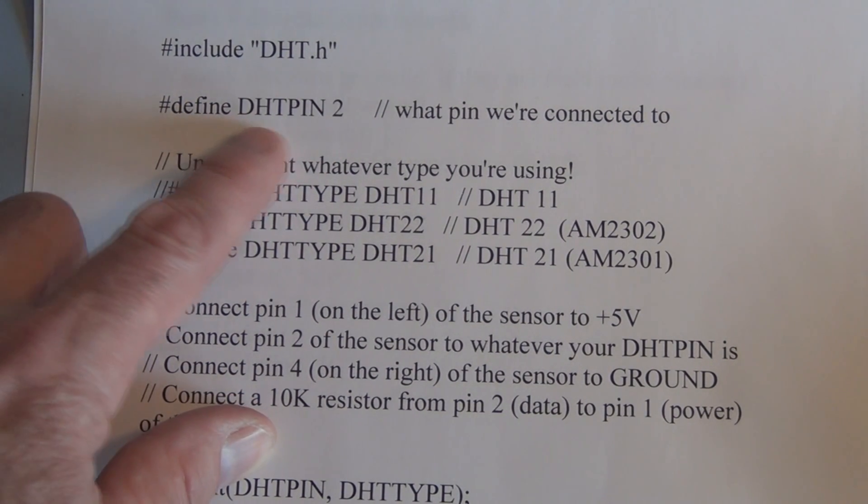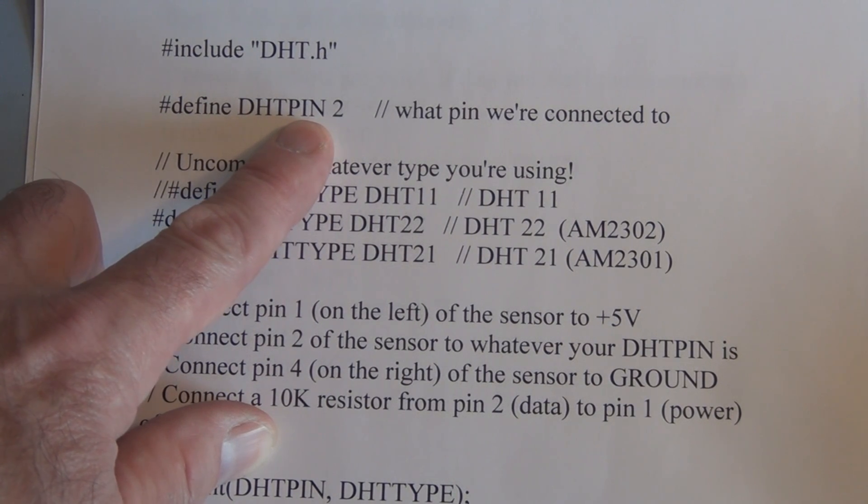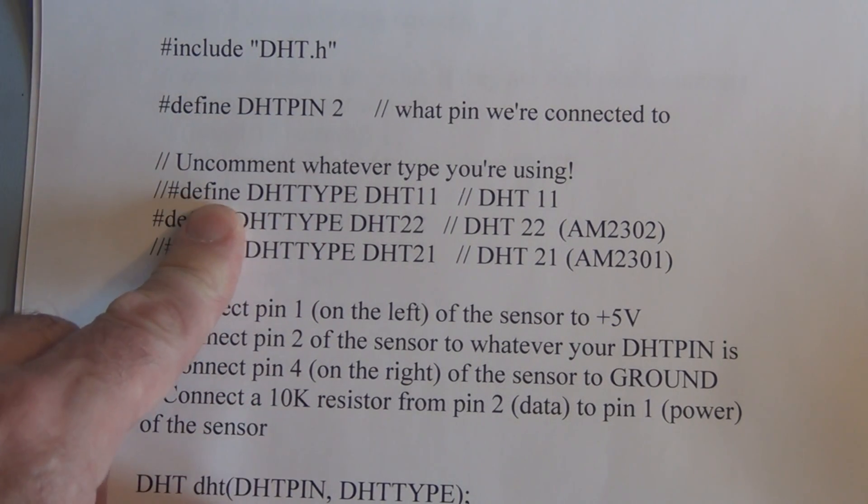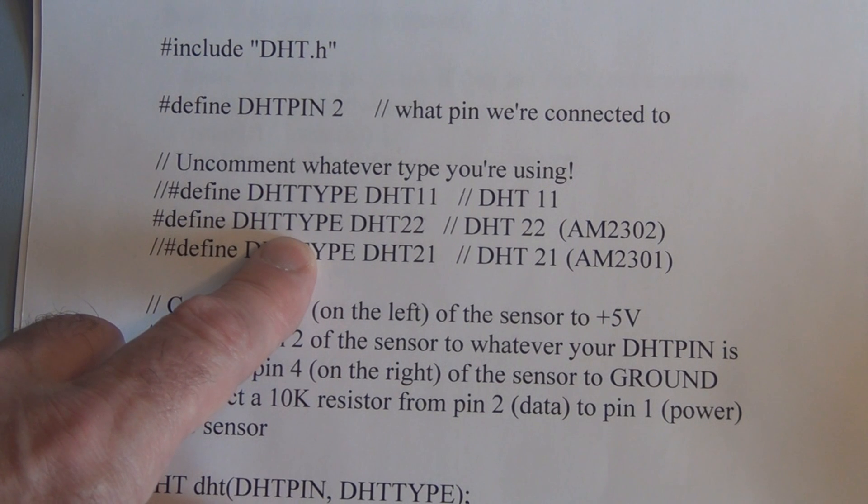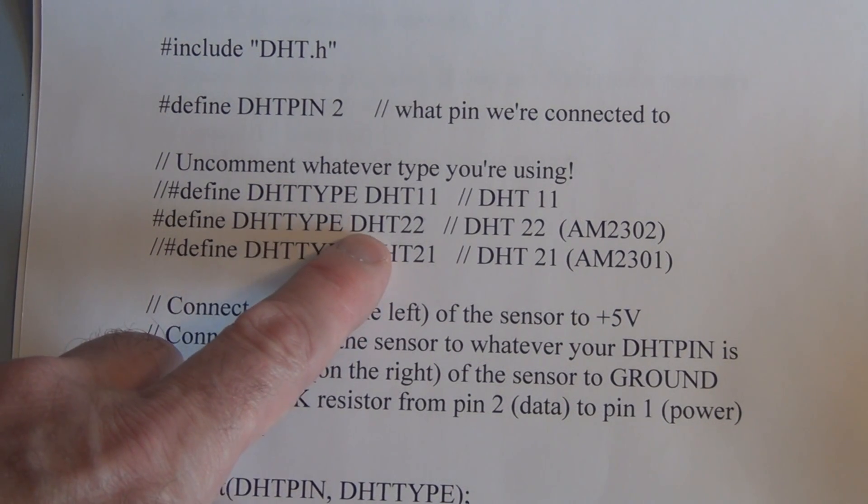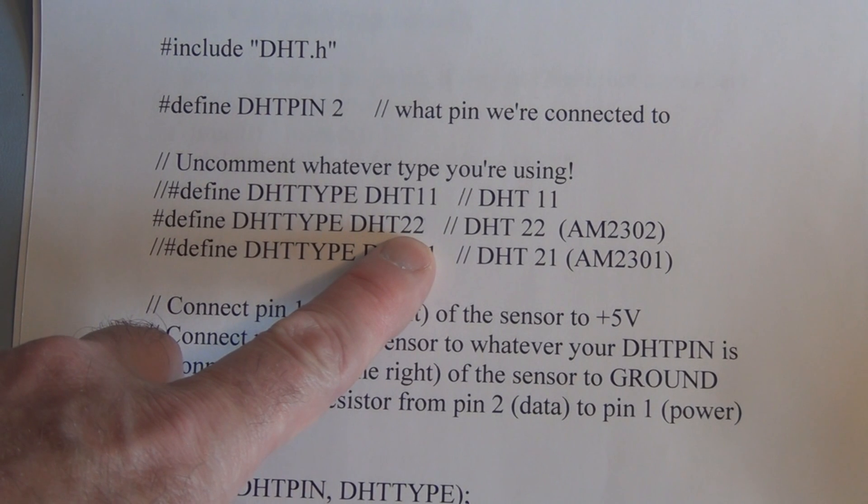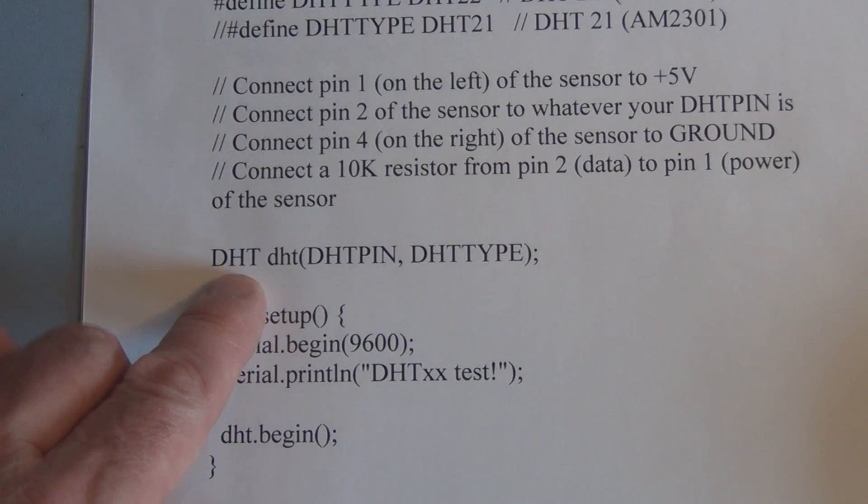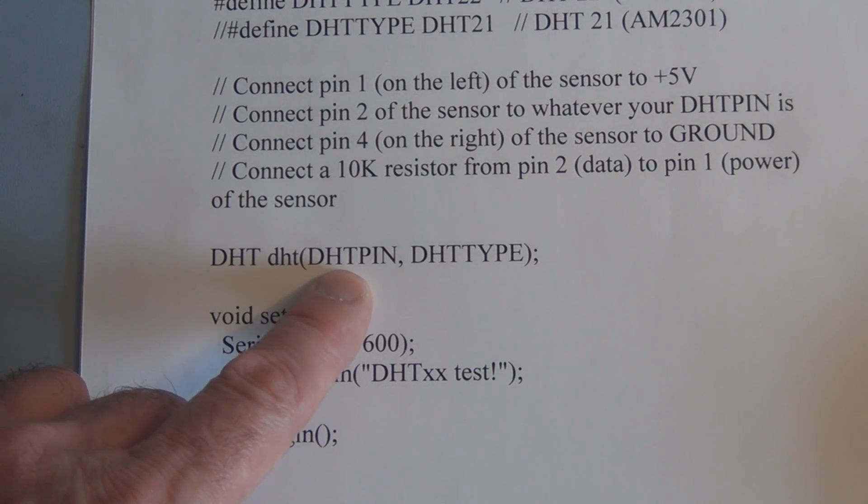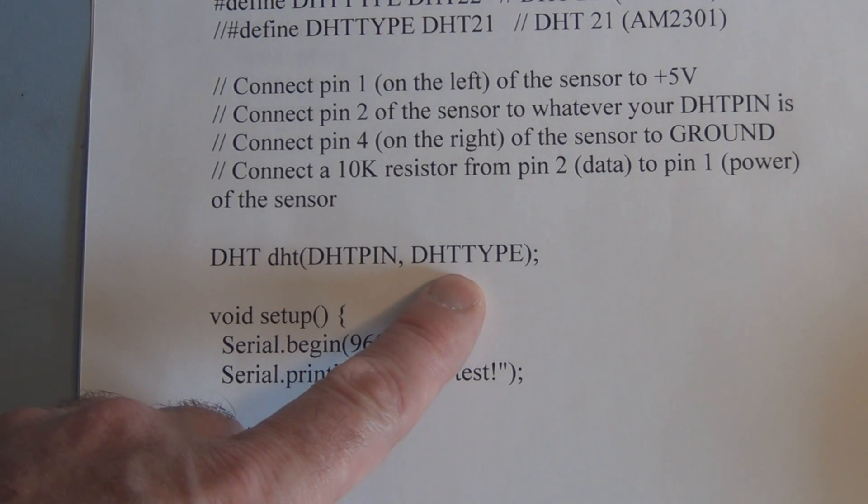Here we're defining what pin the data pin is for that sensor. And here's, I think it's the first time we're using this define statement. It's a C component. And it's going to allow us to name this sensor as a constant value. So here we're using DHT 22 is the model number that I'm using. So here it looks like we're declaring the pin and the sensor that we're using.